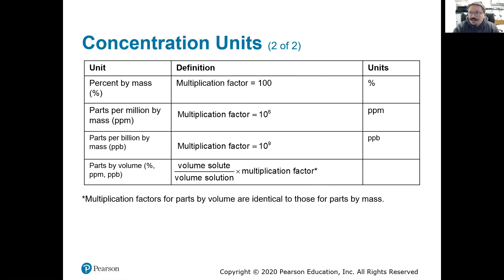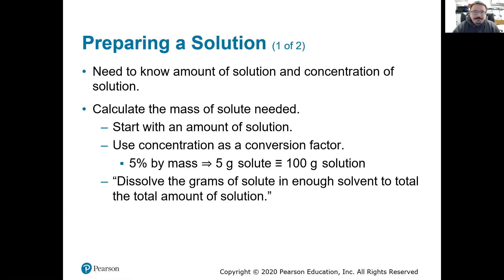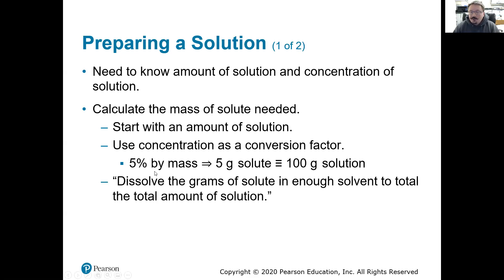So we're going to look at what exactly are the units of those and how we use them. First, preparing a solution — how do we make that? We need to figure out the concentration and how we're expressing it. In this example, a 5% by mass solution means we have mass of solute over mass of solution: 5 grams of solute for every 100 grams of solution. For a 200-gram solution, we'd need 10 grams.